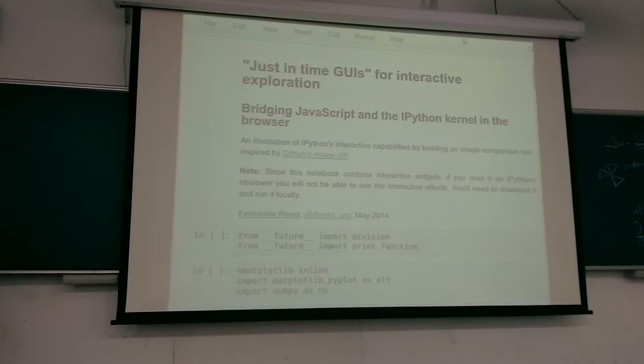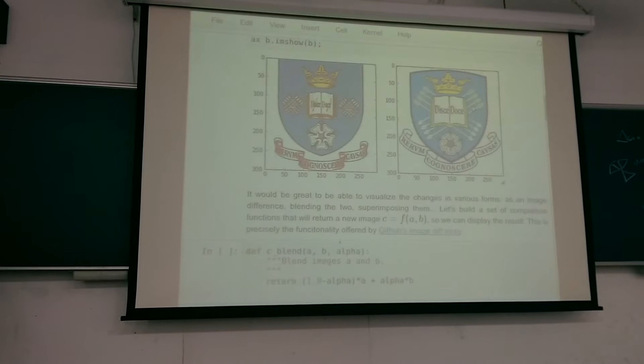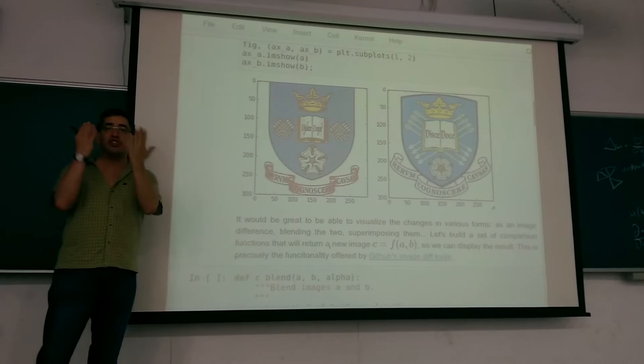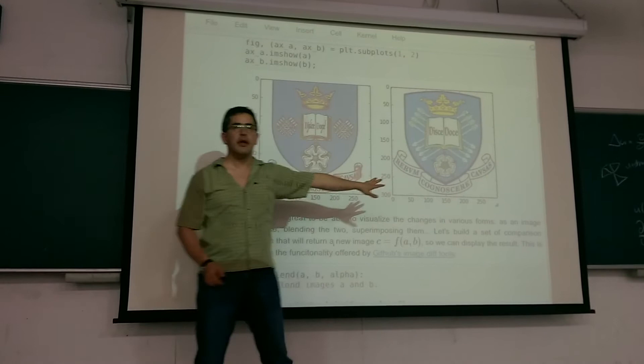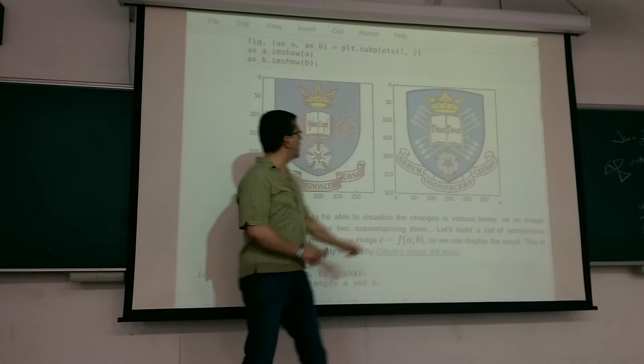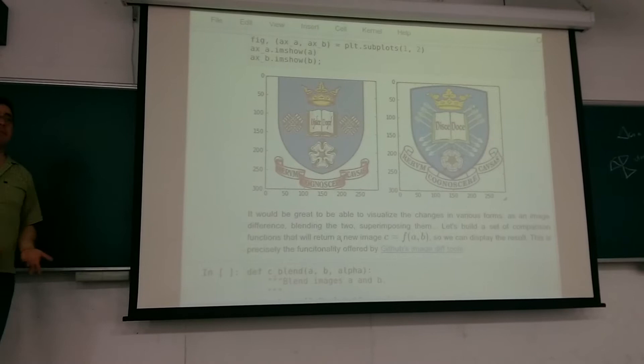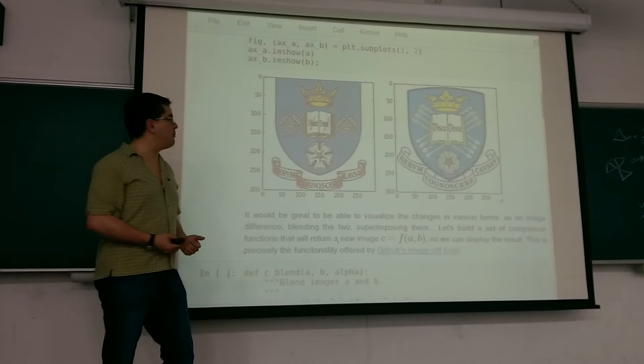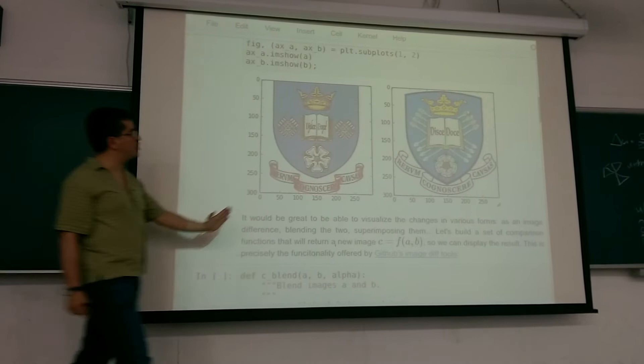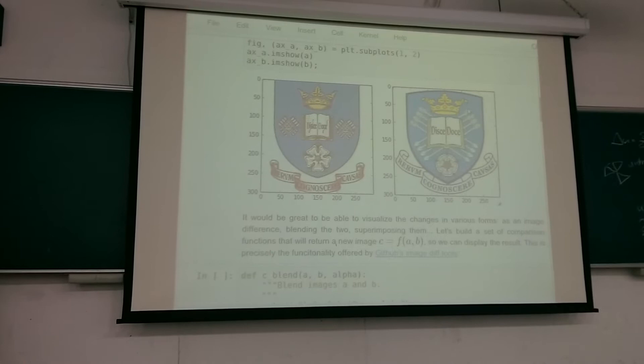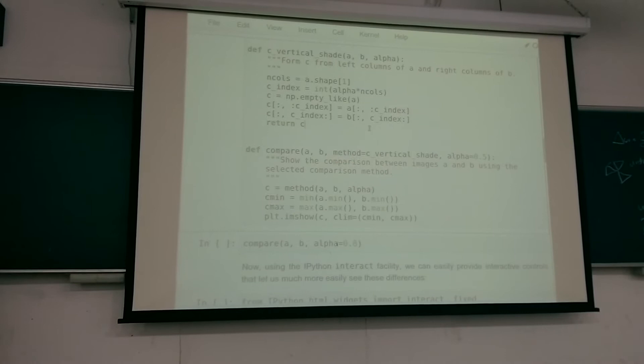Imagine you have two images you want to compare — in this case the old and new logos of a university in England I was visiting two weeks ago. You'd like to know what has changed between these two images. There are many ways to compare images: computing the difference, blending one into the other, showing the left and right parts of either. You can write a couple of simple functions to compare them.